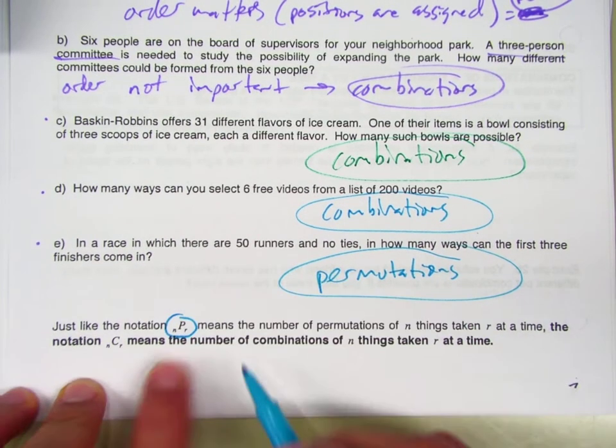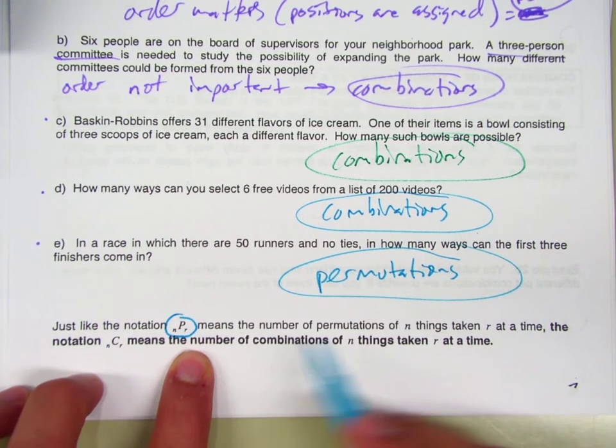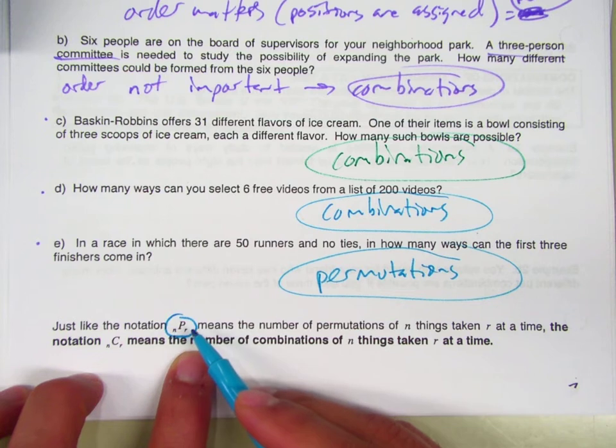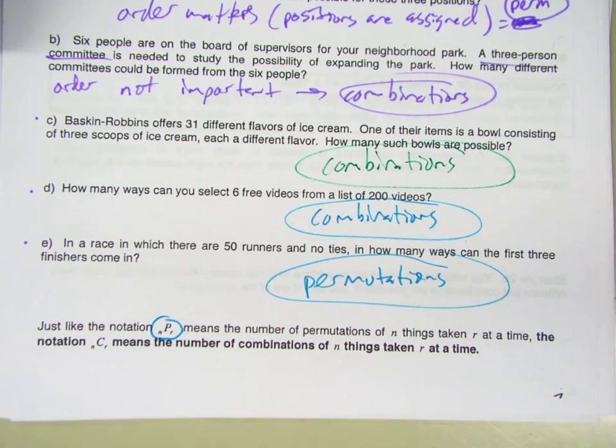So NPR, we've been using for permutations. N represents the total. R represents how many of those items are being rearranged.